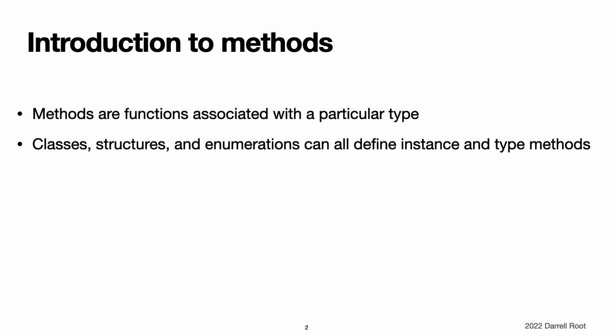The fact that structures and enumerations can define methods in Swift is a major difference from C and Objective-C. In Objective-C, classes are the only types that can define methods. In Swift, you can choose whether to define a class, structure, or enumeration and still have the flexibility to define methods on the type you create.